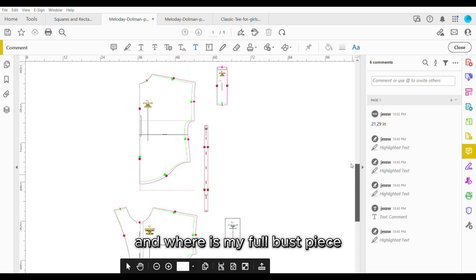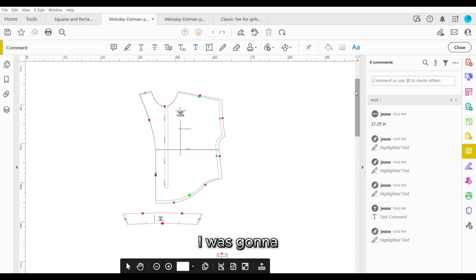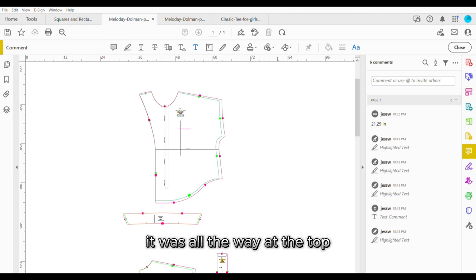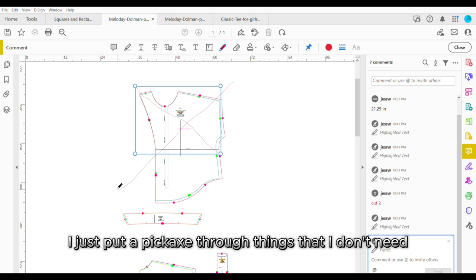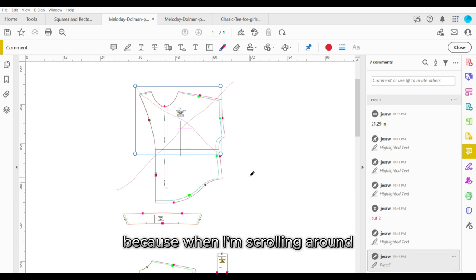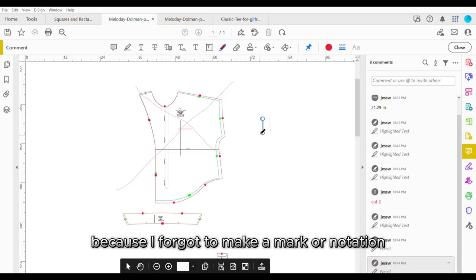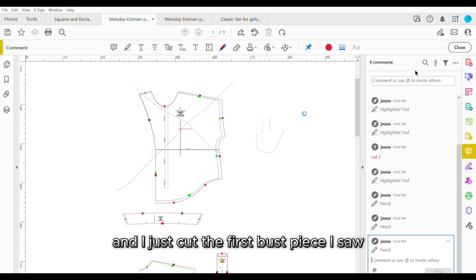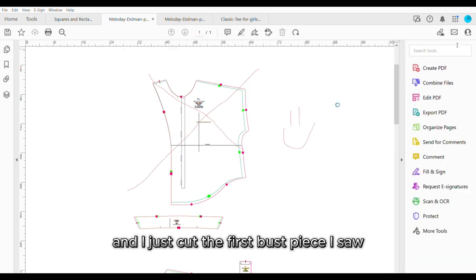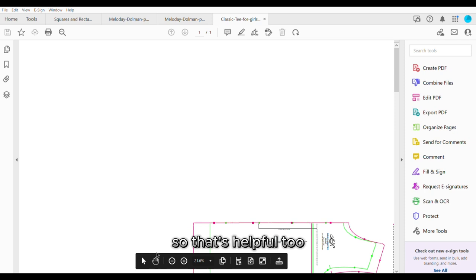And where is my full bust piece? There it is. It was all the way at the top. Sometimes I do this. I just put a big X through things that I don't need because when I'm scrolling around, just trying to cut all the pieces out, sometimes I forget what I'm supposed to be cutting. And all too often I've cut the wrong bust piece because I forgot to make a mark or a notation before I started. And I just cut the first bust piece I saw and then it was incorrect. So that's helpful too.